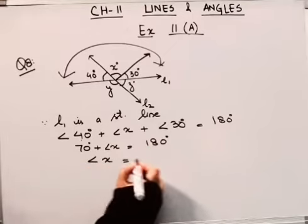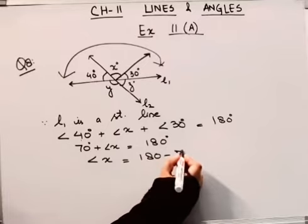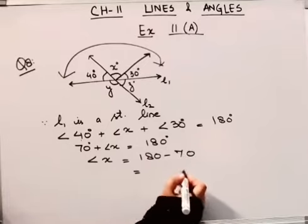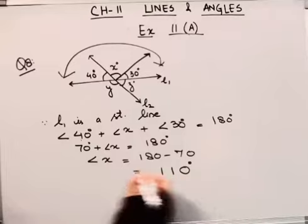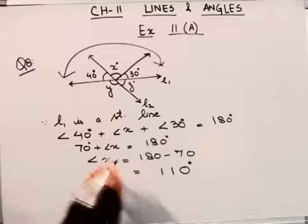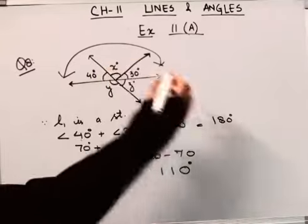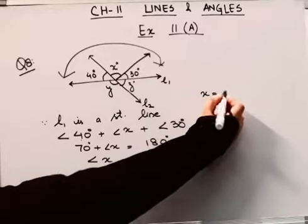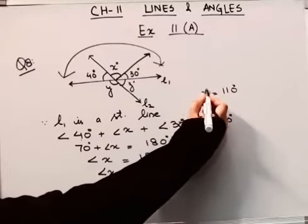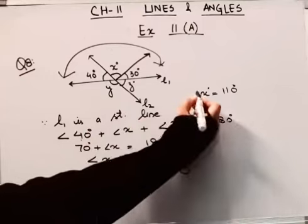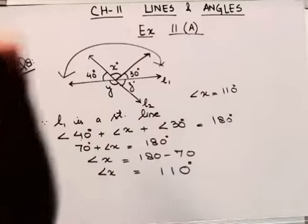So x's value will be 180 minus 70. This will be 110 degrees. So x's value is x equals 110. Angle x is equal to 110 degrees.